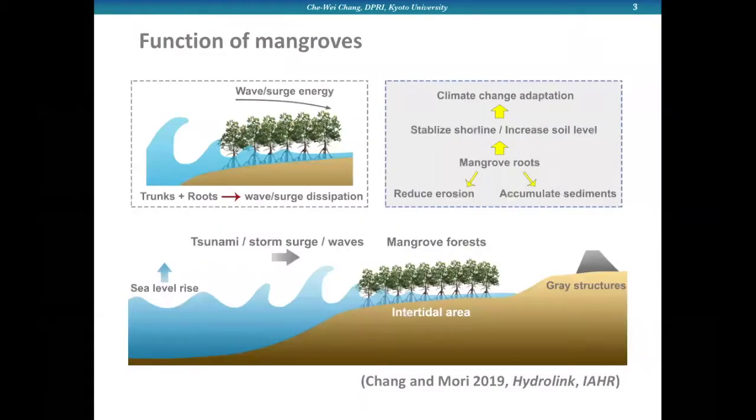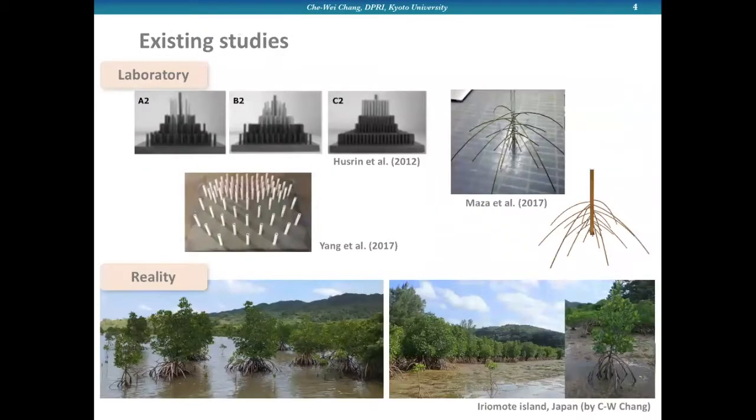Here's a sketch showing the engineering function of mangroves. Due to climate change and rising sea level, wave disasters are getting more severe. Mangroves along with hardware protections are able to protect coastal areas by damping out wave energy. Mangroves also have other functions like reducing sediment erosion. So mangroves have been recognized as a useful approach in coastal protections.